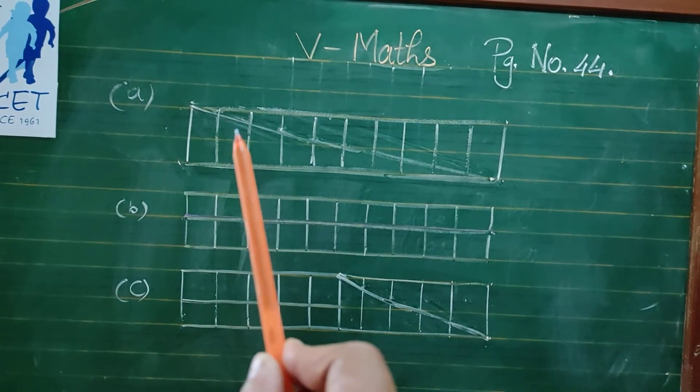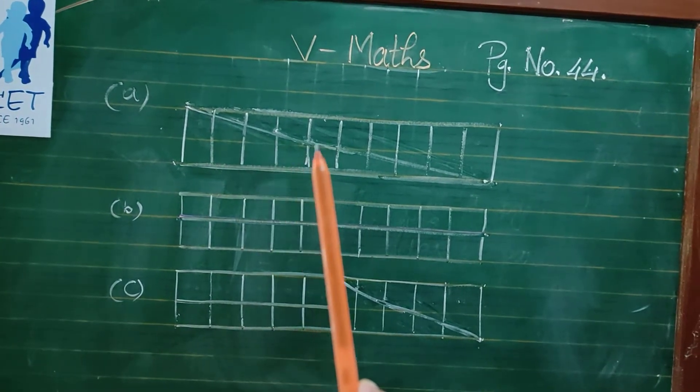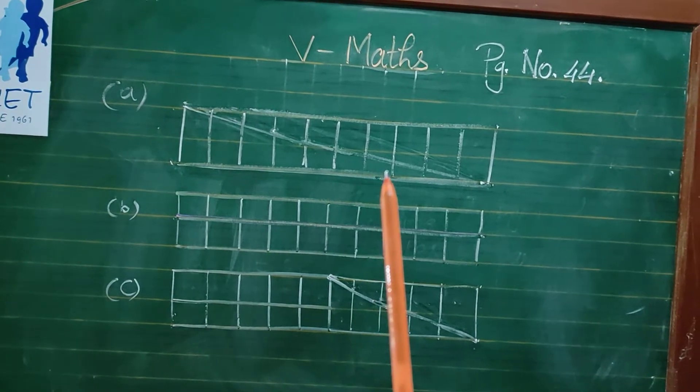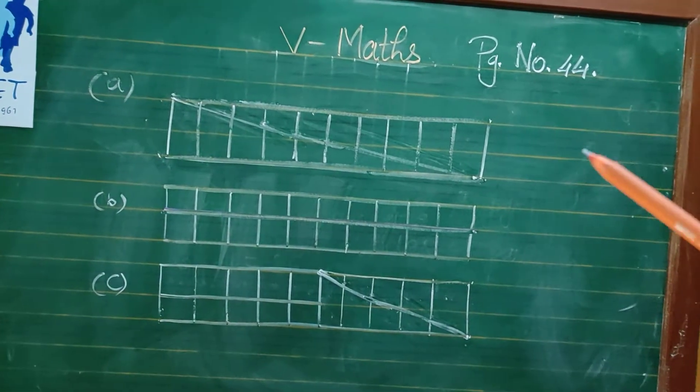1, 2, 3, 4, 5, 6, 7, 8, 9, 10, more than half. Now same way.